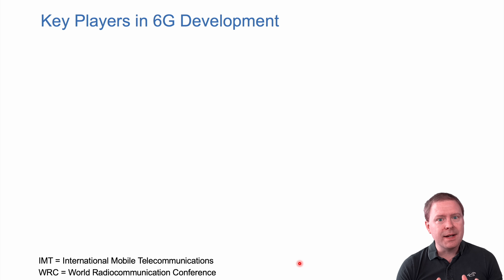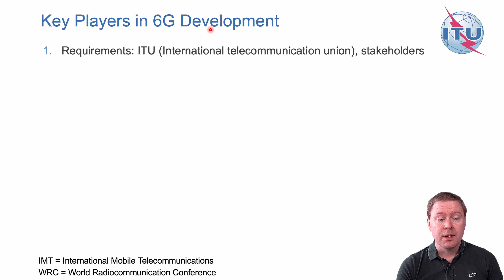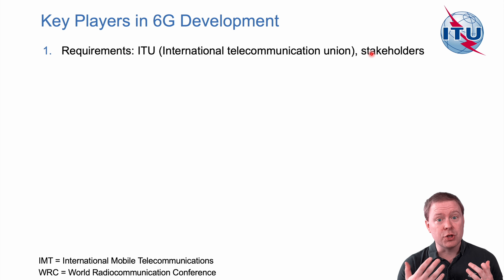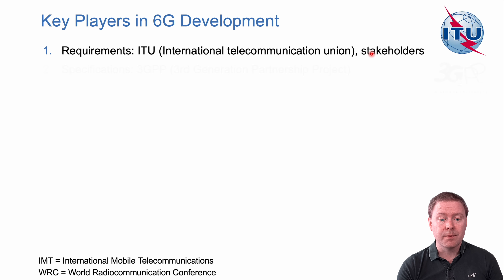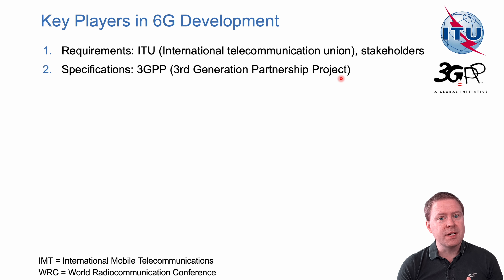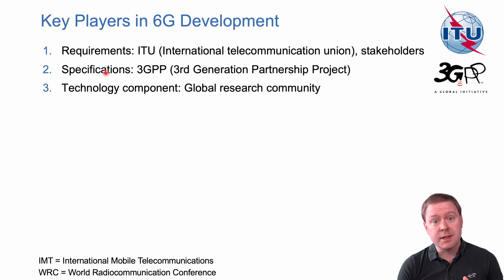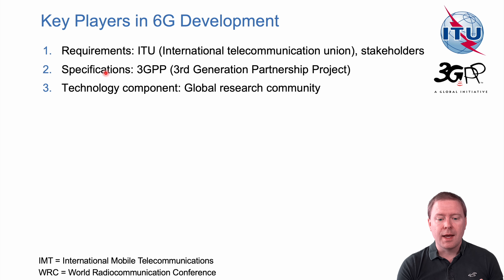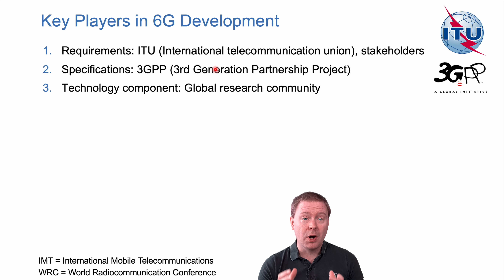Looking at what happens now, there are three main key players in 6G development. The first is the ITU, or the International Telecommunication Union, which sets the requirements for something to be called 6G, monitoring stakeholders to figure out what requirements they seek. Then the specifications are created by 3GPP, the Third Generation Partnership Project, which was originally created for global 3G standards and continued with 4G and 5G. Finally, the technology components for 6G are being created by the global research community — both companies and academia — and will need to be specified as part of the 6G standard.